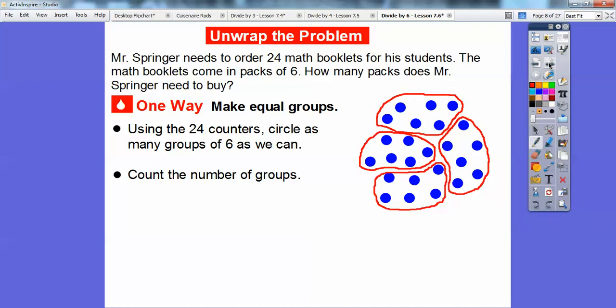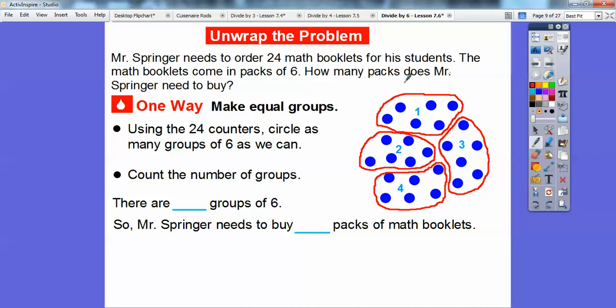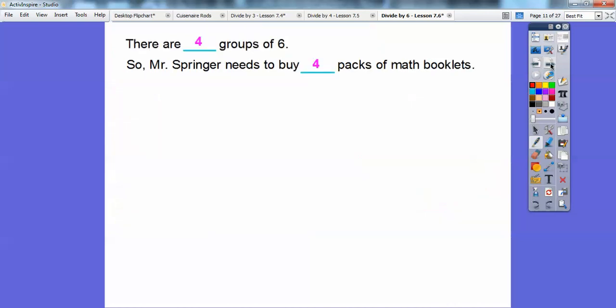Now count the number of groups. There are one, two, three, four groups. So there's four groups of six. Mr. Springer needs to buy four packs of math booklets. We can write this as 24 divided by 6 equals 4.